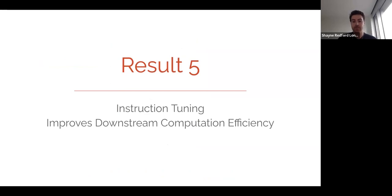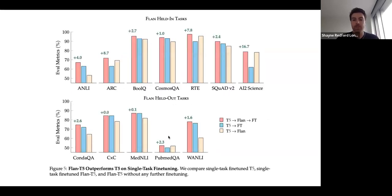The fifth result looks at how instruction tuning can affect when we want to fine-tune for a single task, and specifically the computational efficiency of doing that. So here we have, we're evaluating on a set of metrics. So let's look at the BoolQ example. Here, the blue bar, so I'll note that BoolQ, the training set, was included in Flan, it was held in. But here we're evaluating on the validation set.